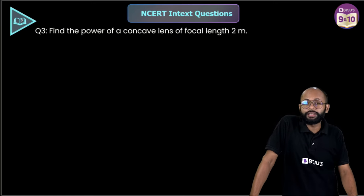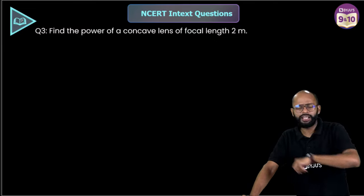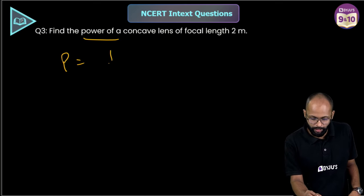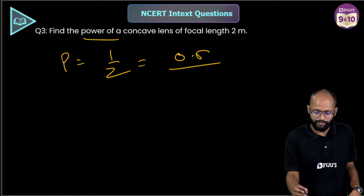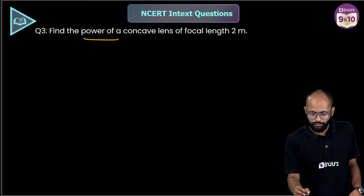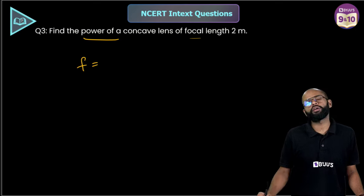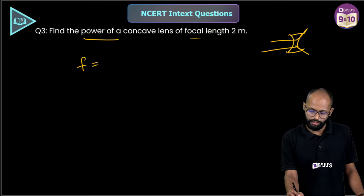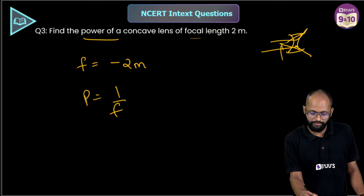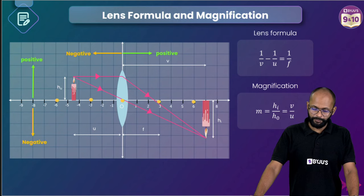Quick question: find the power of a concave lens of focal length 2 meters. Concave lens → focal length is negative: f = −2 m. Power = 1/f = 1/(−2) = −0.5 diopters. Always write values with sign convention — concave lens focal length is negative, so power is negative. No difficulty here.